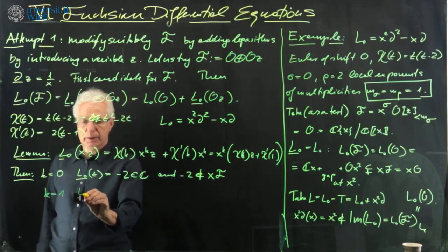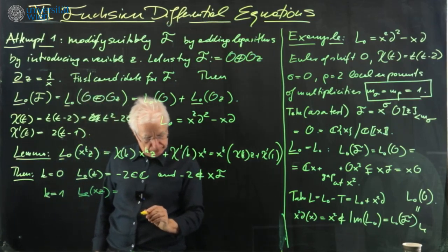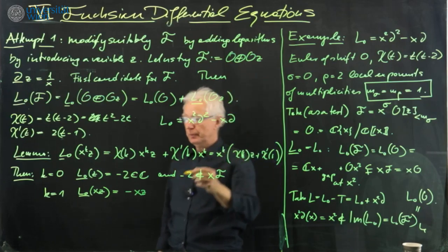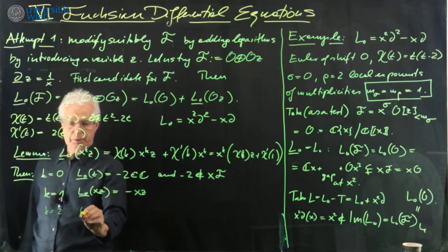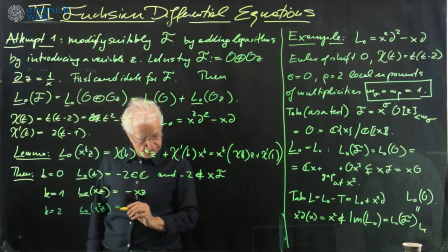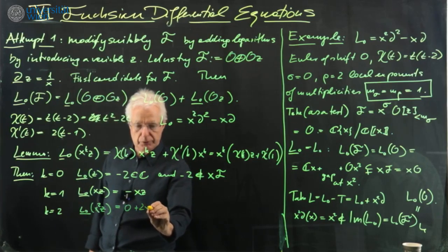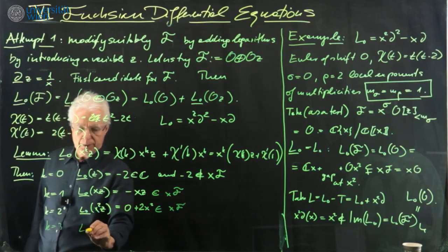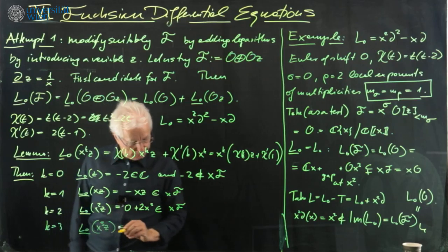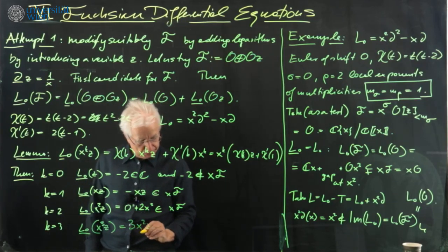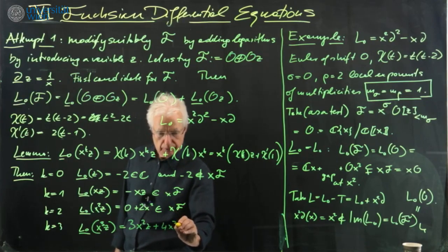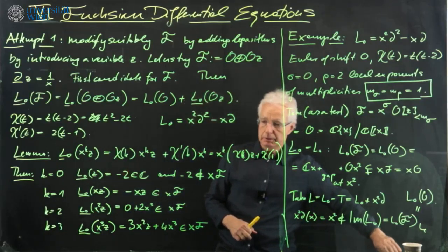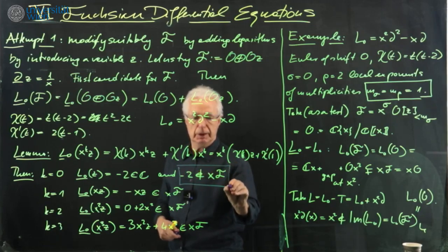For k = 1: L0(x·z) = −x·z, which is okay because it lies in x times this space. For k = 2: L0(x²·z) = 0 + 2x² = 2x², which is in x·F. For k = 3: L0(x³·z) = 3x³·z + 4x³, which is again in x·F. So the problem occurs already in the first step at k = 0 — we cannot control the image of L0 as we want.